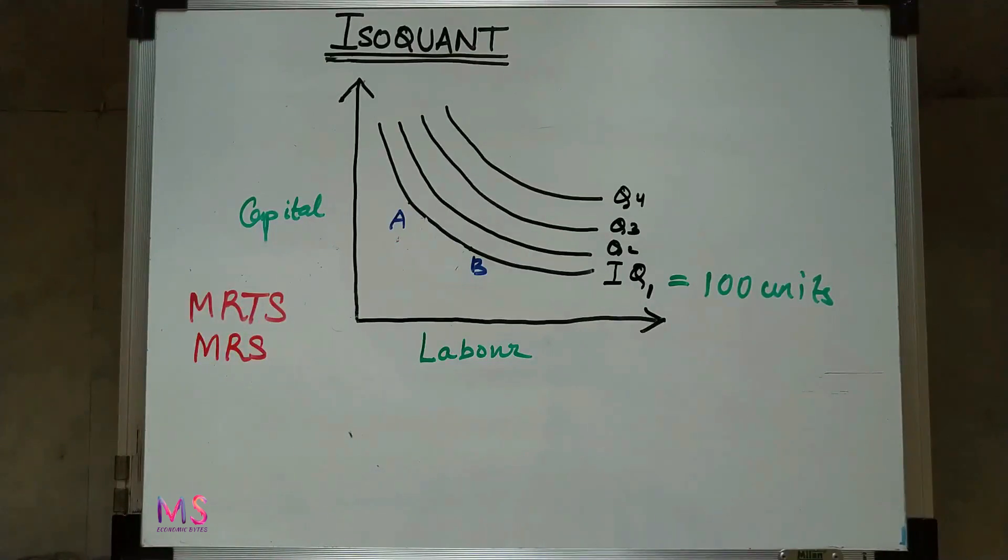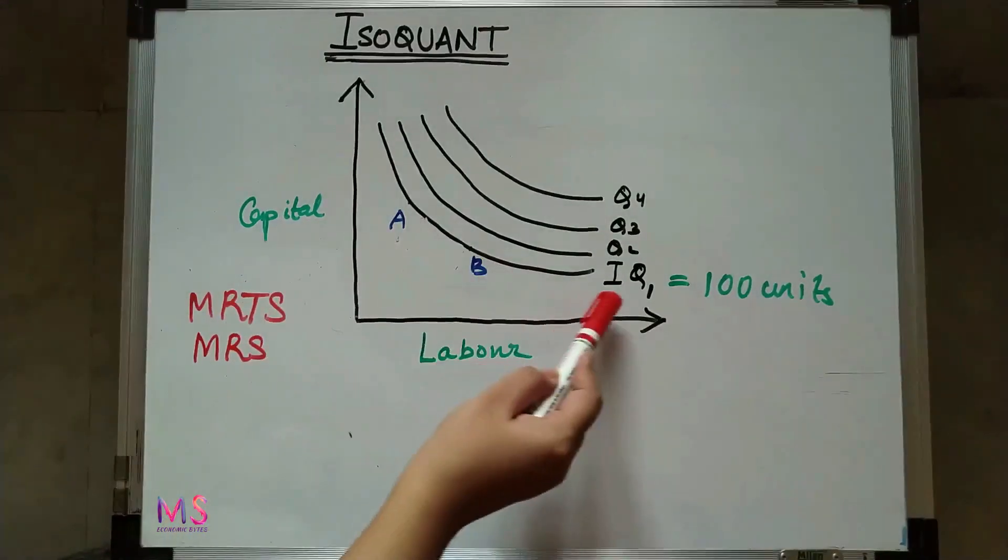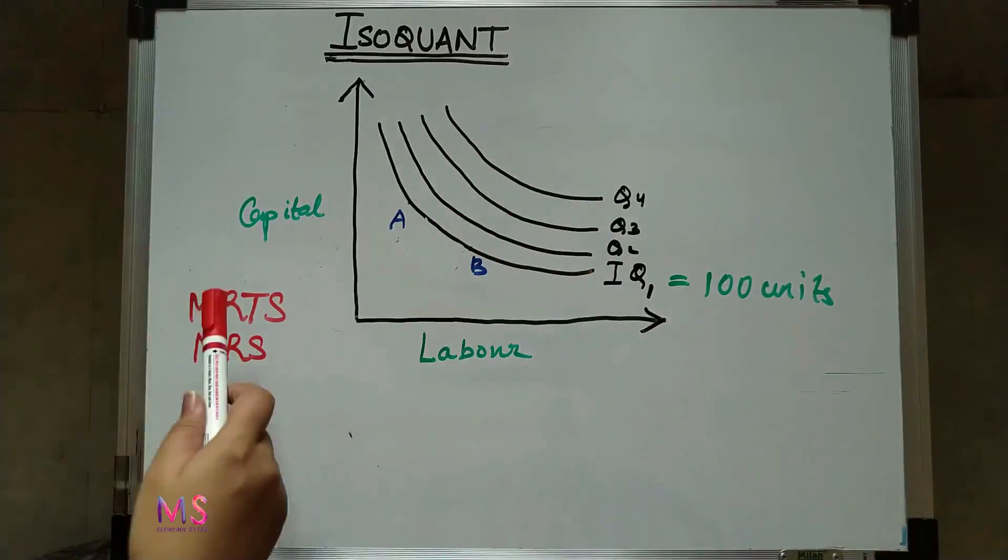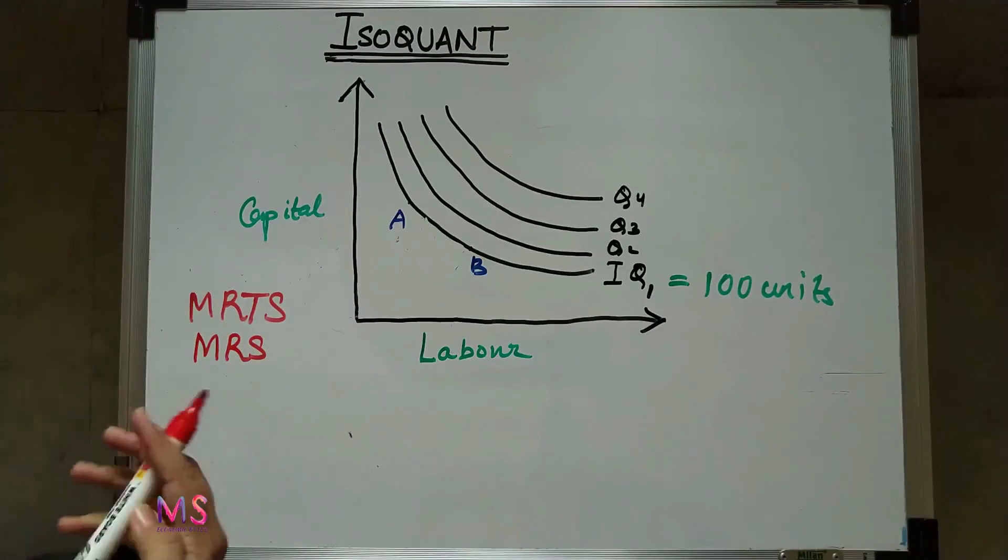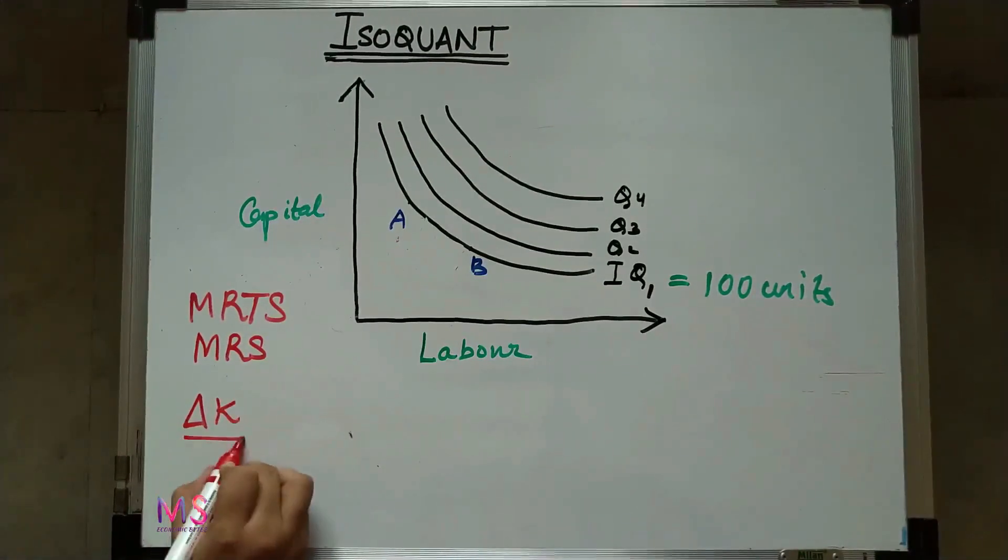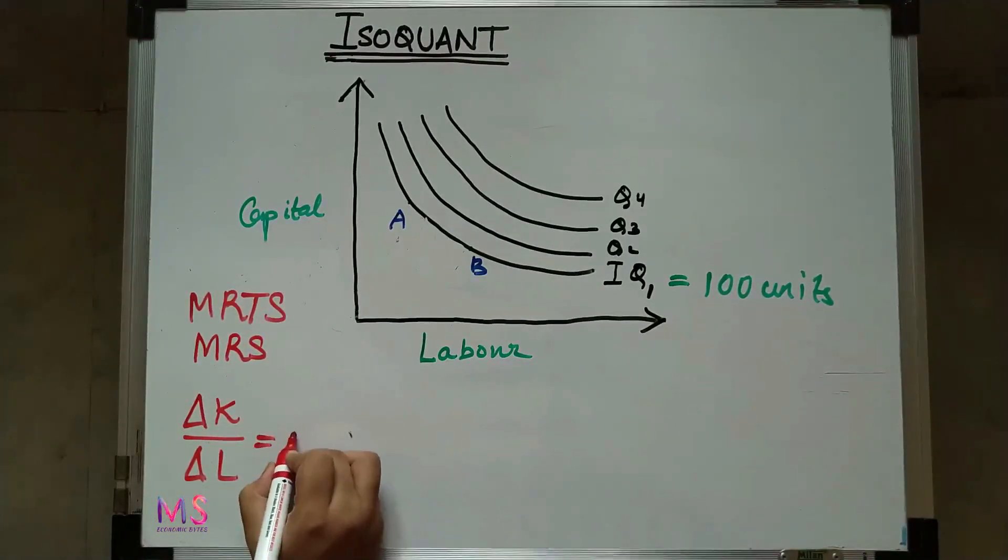The marginal rate of technical substitution indicates the rate at which the factors can be substituted without changing the level of output. Why do we need to substitute the factors? It is because we have to remain at the same level of output. Therefore, the rate at which one factor is substituted for another. Mathematically, it is written as change in K, that is change in capital, divided by change in labor. That is your MRTS.